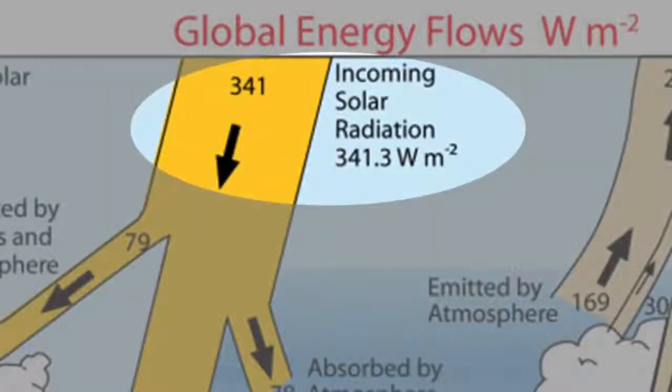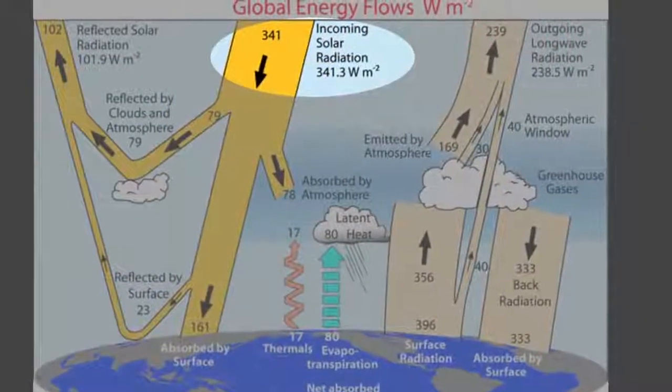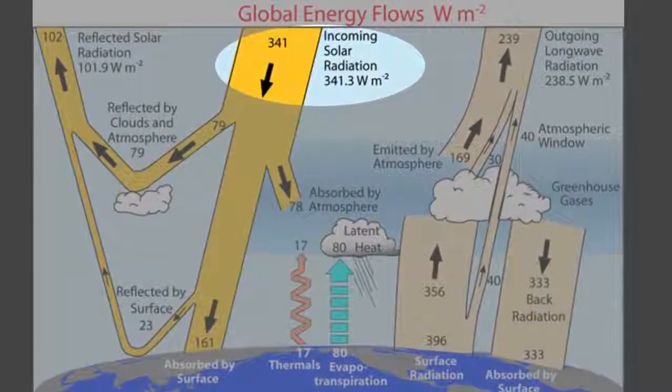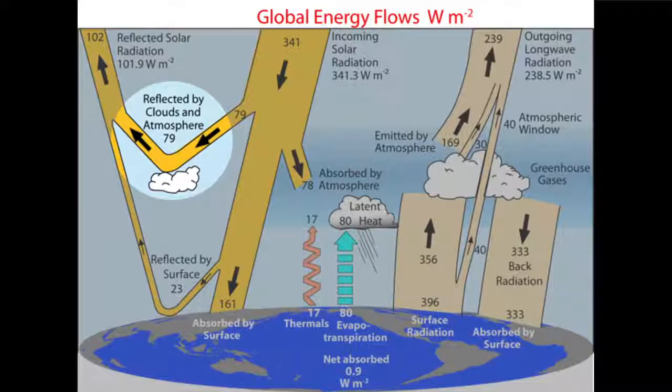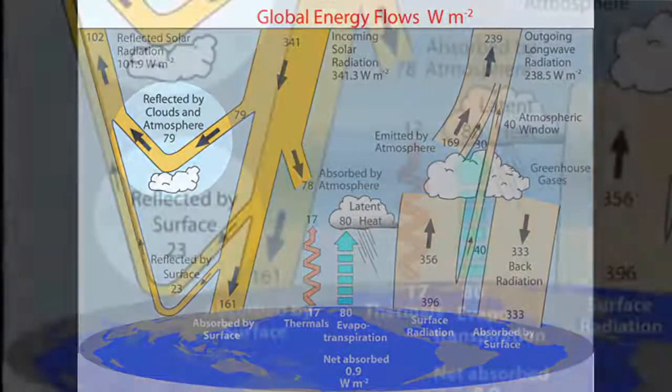By the time the sun's energy reaches the top of Earth's atmosphere, it enters at approximately 341 watts per square meter. But bright white clouds and other shiny particles in the atmosphere reflect a portion of this energy back to space.